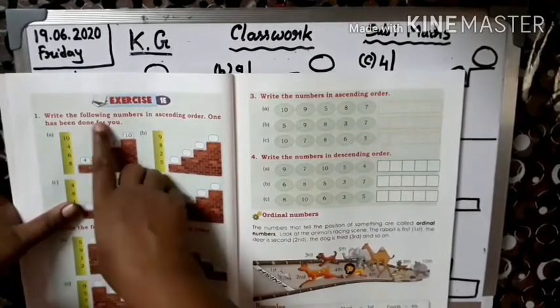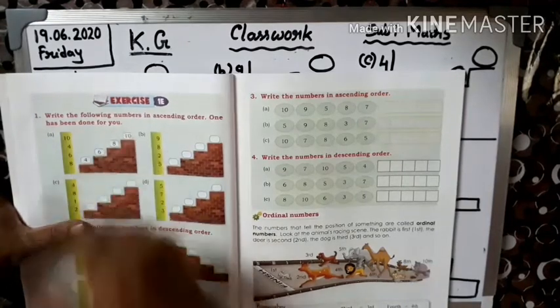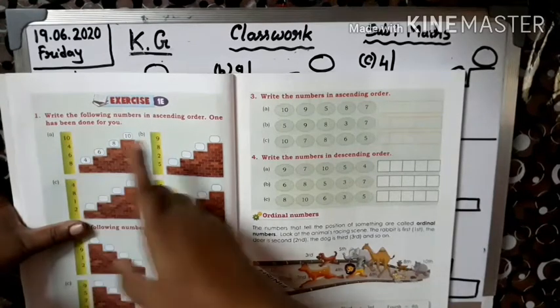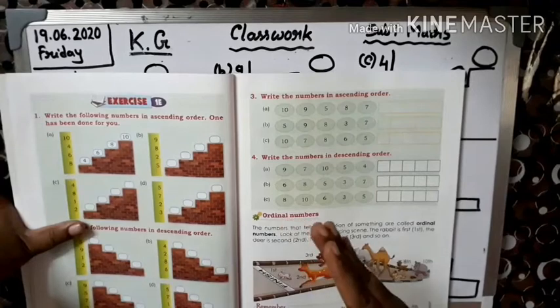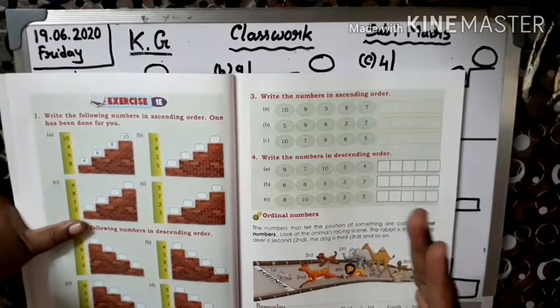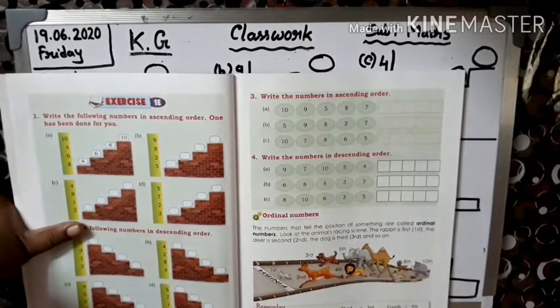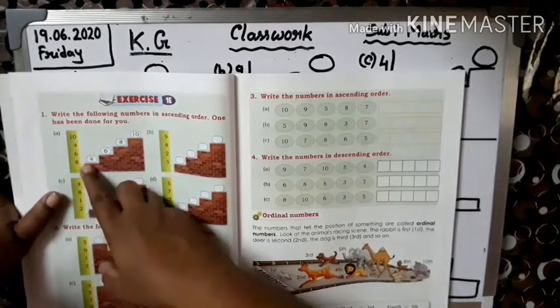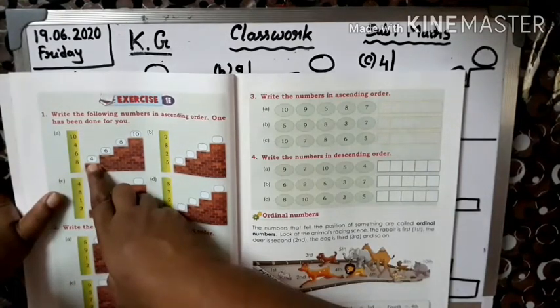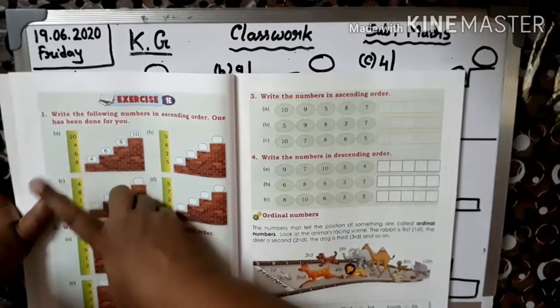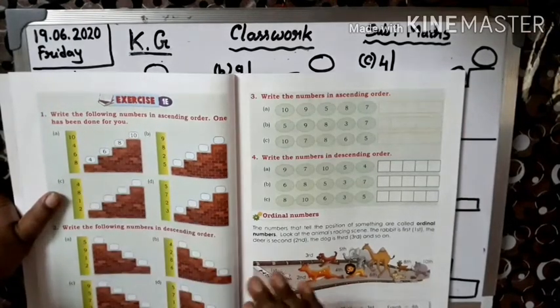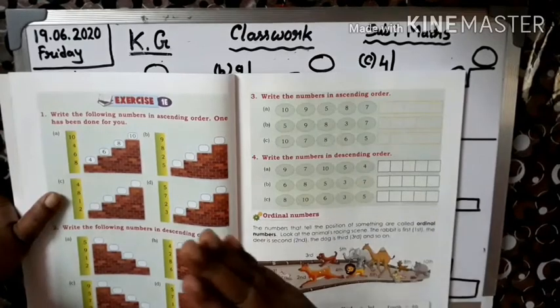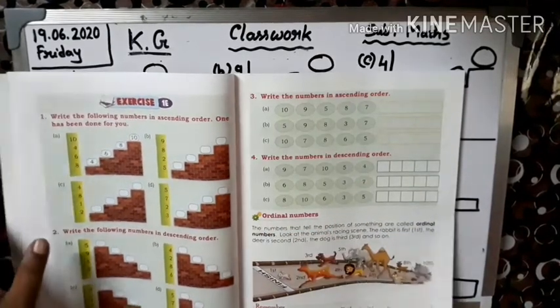Dekho yaha, write the following numbers in ascending order, one has been done for you. Yaha diya hai, dekho, acha se samaj lo. Ascending order bola hai, matlab smallest to biggest number me jana hai. Toh kaisa: ten, four, six, eight - sab mila jula ke diya hai. Abhi tumko nikalna hai smallest number kaunsa hai. One se agar tum shuru karoge - one nahi hai, two nahi hai, three nahi hai, four hai. Toh first four likha. Five nahi hai, six hai, six likha. Seven nahi hai, eight hai, nine, ten.